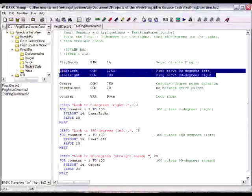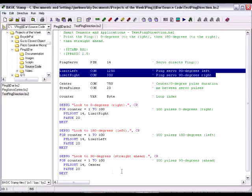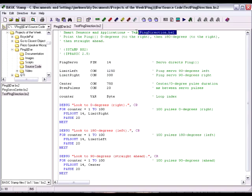Especially since the first thing that we're going to want to do is to mark the limit left and limit right values from the PingDAR test program test ping direction. And these values tell the bracket how to perform a 180-degree sweep.